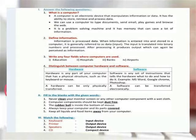Information is produced with data. When information is entered into and stored in the computer, it is generally referred to as data input. The input is transferred into binary numbers and processed. After processing, it produces output which can again be used as information.